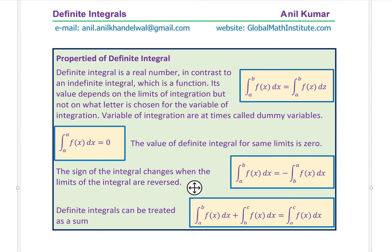Now let's look into the properties of definite integrals. When finding definite integrals, the variable — whether you use f of x or f of z — doesn't really matter. So the first property is that the definite integral is a real number, in contrast to an indefinite integral which is a function. Its value depends on the limits of integration a and b, but not on what letter is chosen for the variable of integration. Variables of integration are at times called dummy variables.